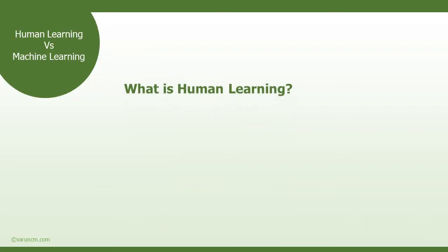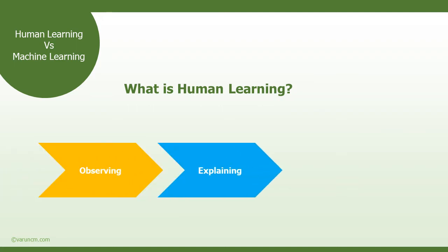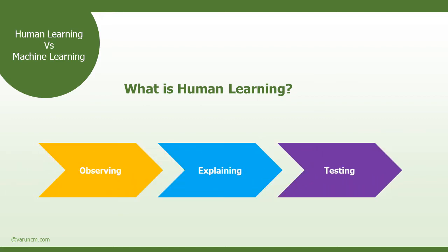First of all, we want to know what is human learning. Human learning is all about observing things, recognizing a pattern, elaborating a theory or a model which explains the pattern, and then putting that theory to the test and checking whether it matches most or all the observations. So first we will be observing and recognizing the pattern, then elaborating or explaining those patterns, and then testing whether we are getting the proper observation.